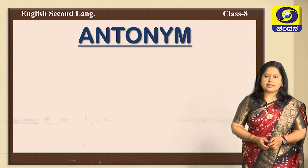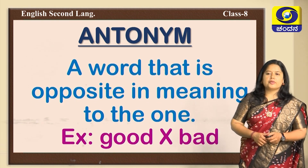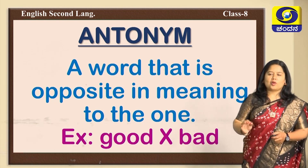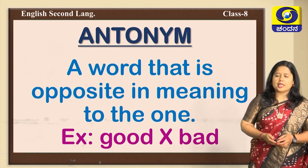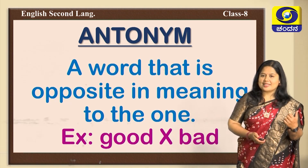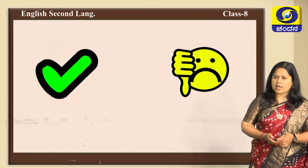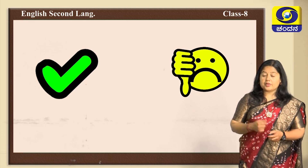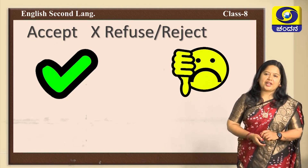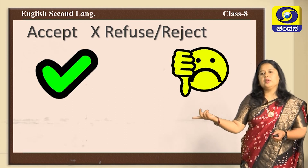Now let us look at antonyms. Antonyms are words that are opposite in meaning — simply put, opposite words. Here are some examples for you to learn better, and you need to concentrate on this because you will get practice questions based on the same. The first pair: 'accept' and 'refuse.' Example: 'One cannot choose to accept only good and reject bad things in life — accepting only good and rejecting bad cannot happen in life; we have to accept both.'